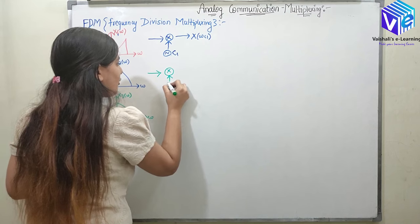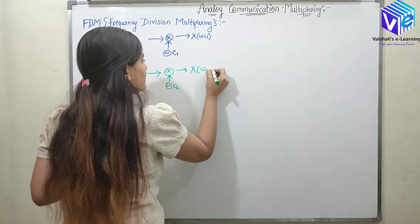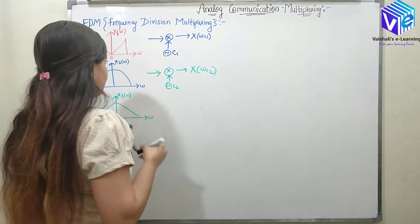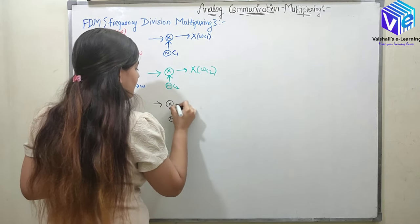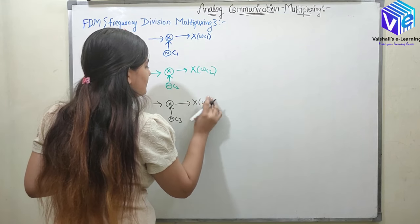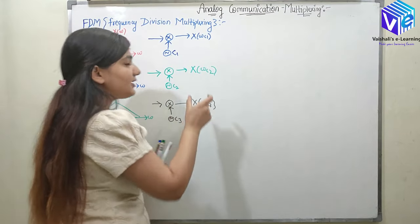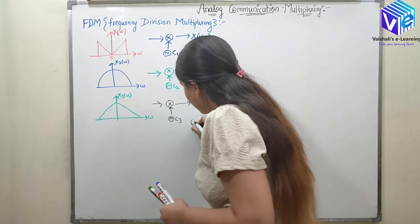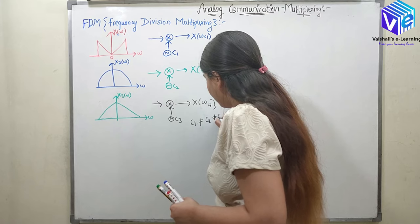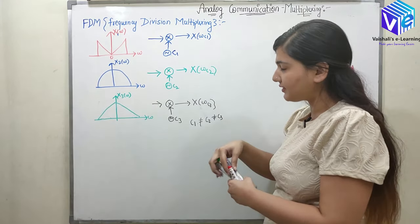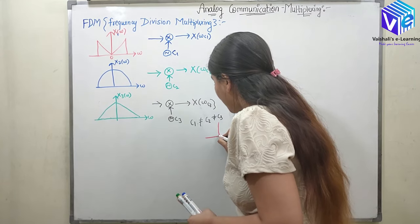Similarly, when the second signal is multiplied with an oscillator having frequency c2, I will get x of omega at c2. And when the third signal is multiplied with c3, I will get x of omega at c3. So now I am getting three signals at three frequencies, where c1 is not equal to c2 which is not equal to c3.